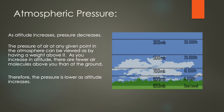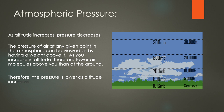Now we're going to look at atmospheric pressure. As our altitude increases above sea level, the pressure of the air decreases — the weight above us decreases. As we get closer to the ground, pressure increases. The pressure of air at any given point can be viewed as the weight above it. As we increase altitude, there are fewer air molecules above you than at the ground. If we had a cubic metre of air at sea level there would be a substantial amount of air molecules; as we go further up in the atmosphere, the same given volume of air will contain fewer air molecules. So as we go up in altitude, pressure decreases.